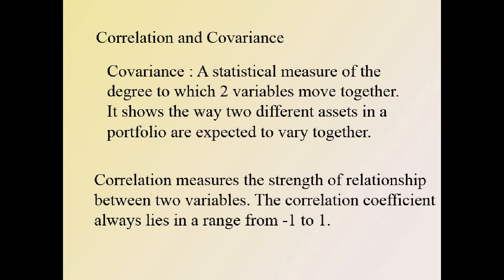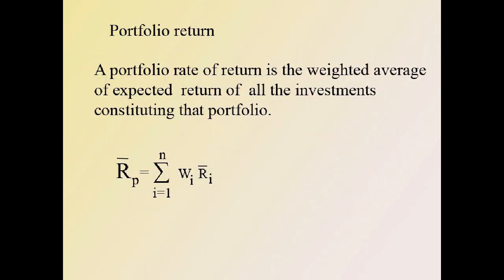Correlation measures the strength of a relationship between two variables. The correlation coefficient always lies between −1 and +1. Positive correlation means two securities' returns move in the same direction; negative correlation implies returns move in the opposite direction; a zero correlation means there is no linear relationship between the variables.